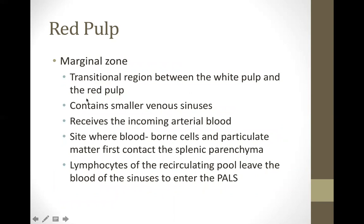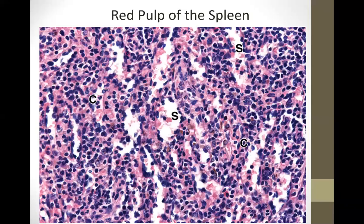The marginal zone in the red pulp is the transitional region between the white pulp and the red pulp. It contains smaller venous sinuses, receives incoming arterial blood, and is the site where blood-borne cells and particulate matter first come into contact with the splenic parenchyma. Lymphocytes from the recirculating pool leave the blood at the sinuses to enter the periarterial lymphoid sheath. In the image, the splenic cords of Billroth and the splenic sinuses are visible.